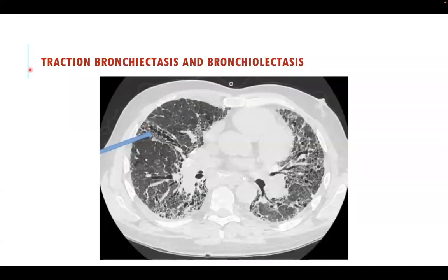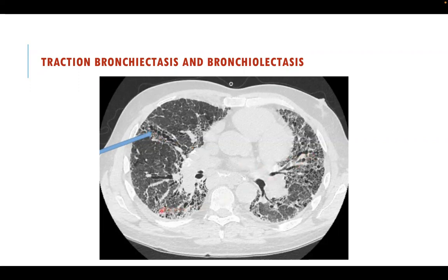The second feature of fibrosis visible on UIP pattern is traction bronchiectasis and traction bronchiolectasis. This is recognized by non-tapering of the bronchus when directed distally into the lung — it should be tapering. Here it is non-tapering and appears beaded. Bronchiolectasis is the bronchiolitic dilatation of the bronchi. Both are the second sign of fibrosis, alongside honeycombing.